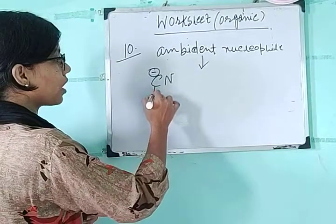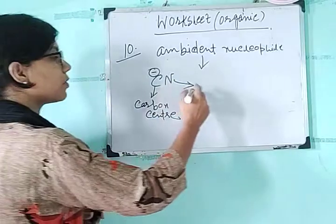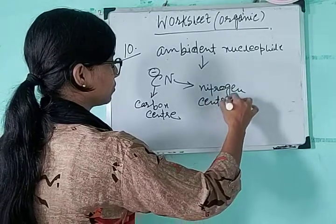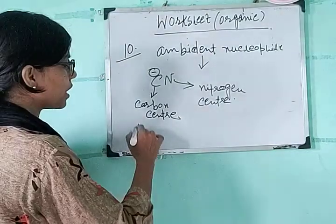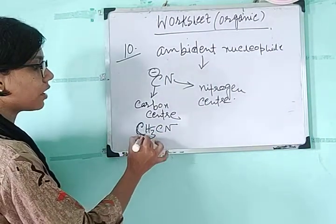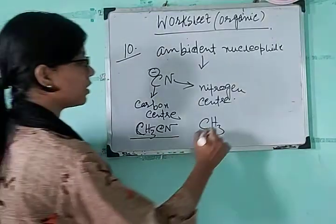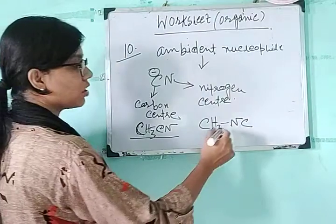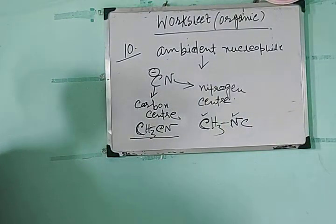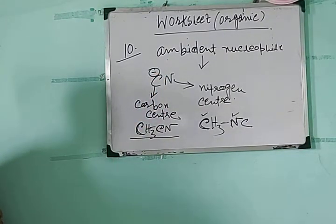CN⁻ is an ambident nucleophile because sometimes it donates through its carbon center and sometimes it donates from its nitrogen center. For example, CH₃CN has a carbon-carbon linkage, while CH₃NC is the isocyanide form with a carbon-nitrogen linkage. So cyanide can attack or donate by utilizing both its carbon center and nitrogen center, which is why it is termed an ambident nucleophile.